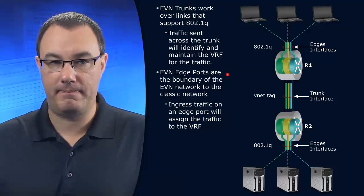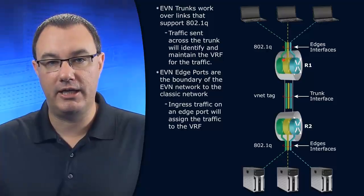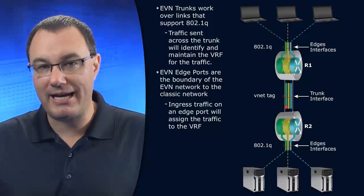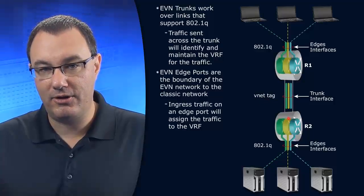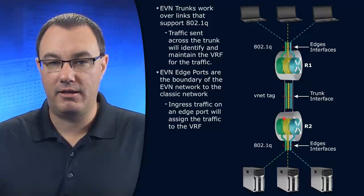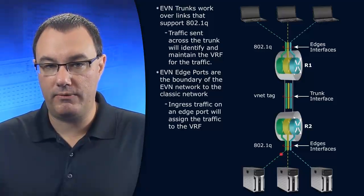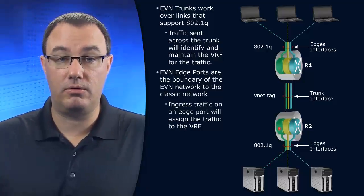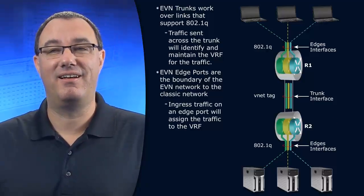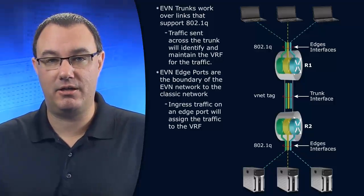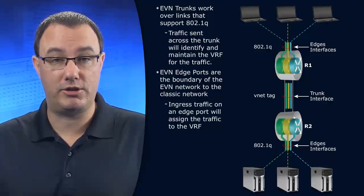The edge ports are the boundary — traffic comes in and is then married to one of these VRFs. We preserve that mark as it goes through the 802.1q tag. As it traverses the trunk, the tag gets read on ingress on the other side, and that information tells us what VRF to put it back into. Then we forward it out to the correct local link. Easy Virtual Networking — is it easy? That remains to be seen, but it is a very powerful, if very situational, technology.